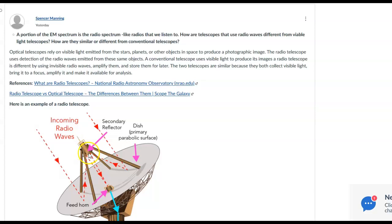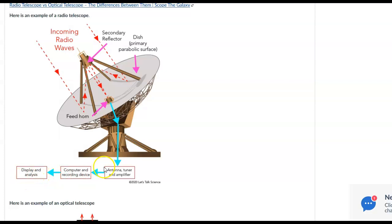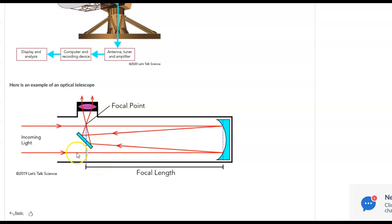And then they are gathered in what they call here the secondary reflector, and then they're piped down to a feed horn where it's then transferred by cables. You read all this, I know I'm not telling you anything different here.